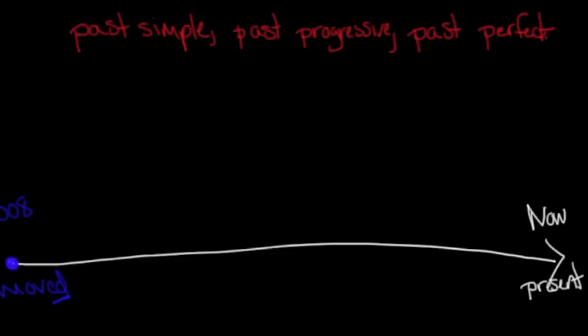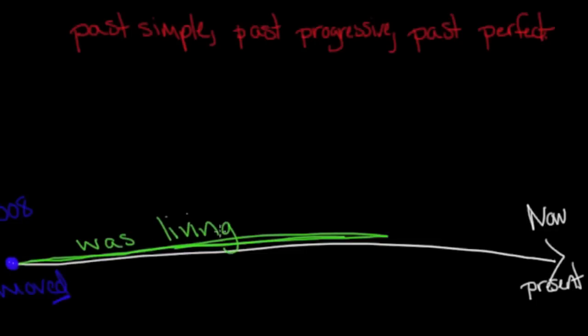And now I'm going to put some green on the timeline here. This green right here, you can see, this green is when I was living in Argentina. I was living, as you can see, that's our past continuous or past progressive. I was living in Argentina.